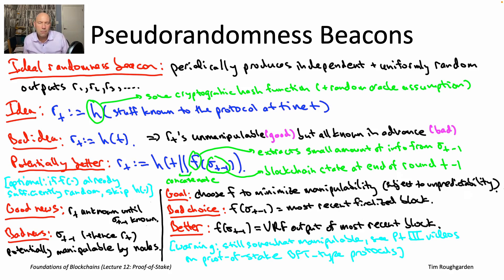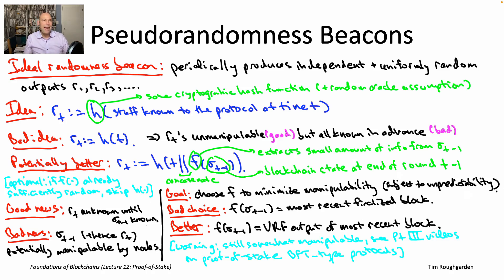In practice, several proof-of-stake blockchain protocols have basically made peace with this limited amount of manipulability. For example, the approach to sampling leaders sketched here is basically how it works in the Algorand blockchain. In proof-of-stake Ethereum it's pretty similar but a little more complicated: rather than just looking at the credentials submitted by the most recent block proposer, you look at a batch of signatures by previous block proposers, aggregate all of those signatures, and treat the aggregated signature as basically being some kind of pseudo-random seed.